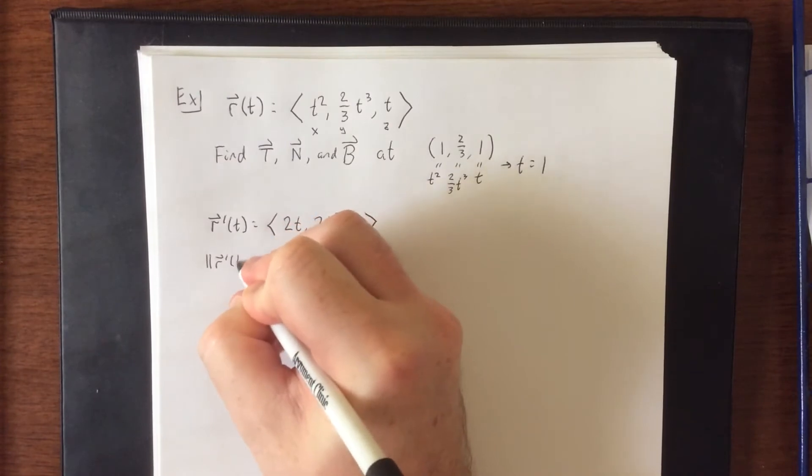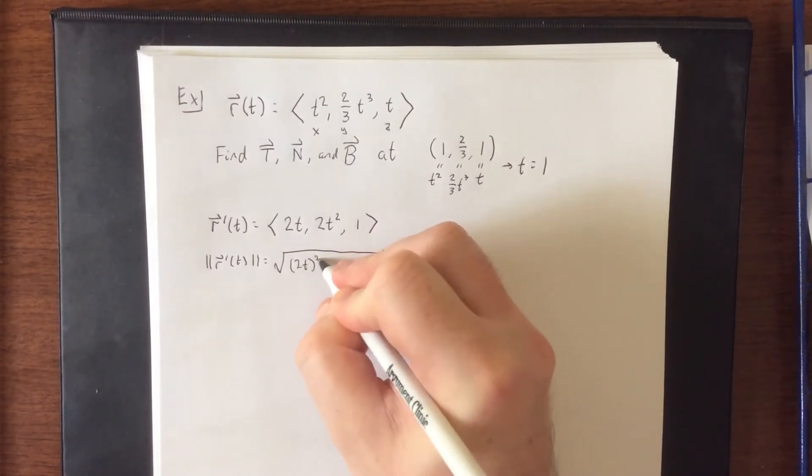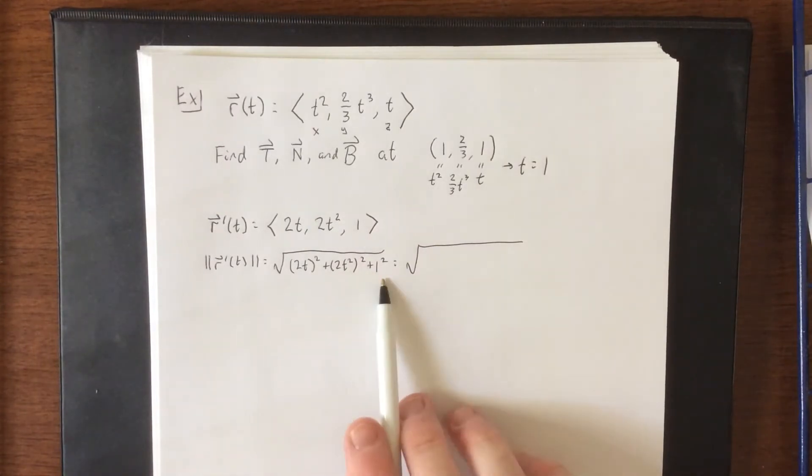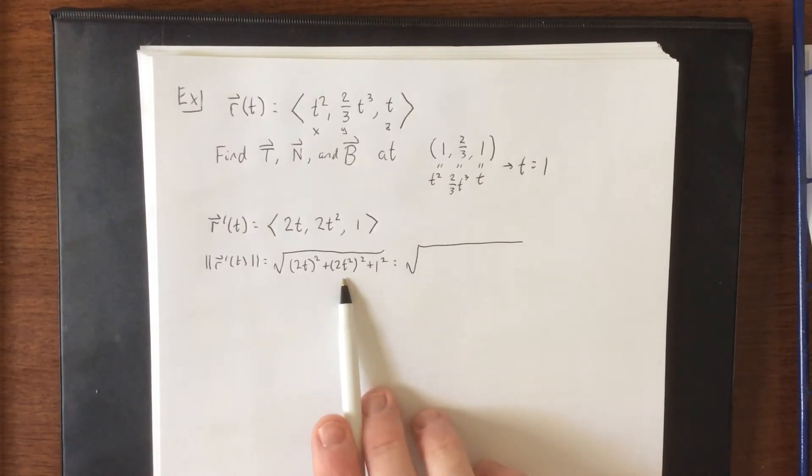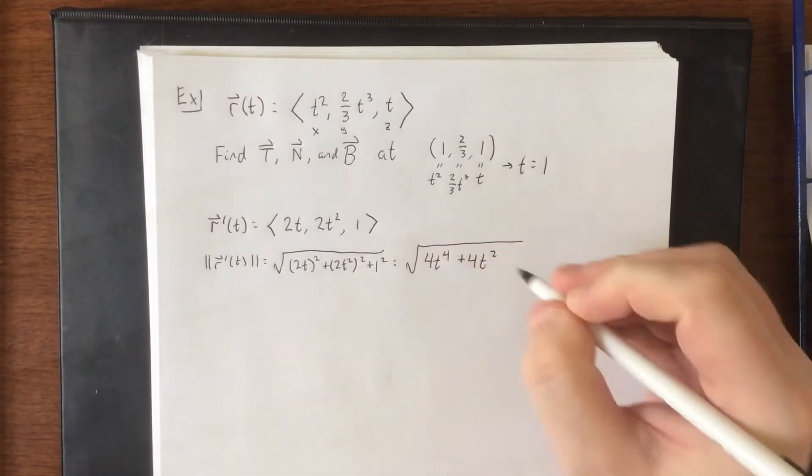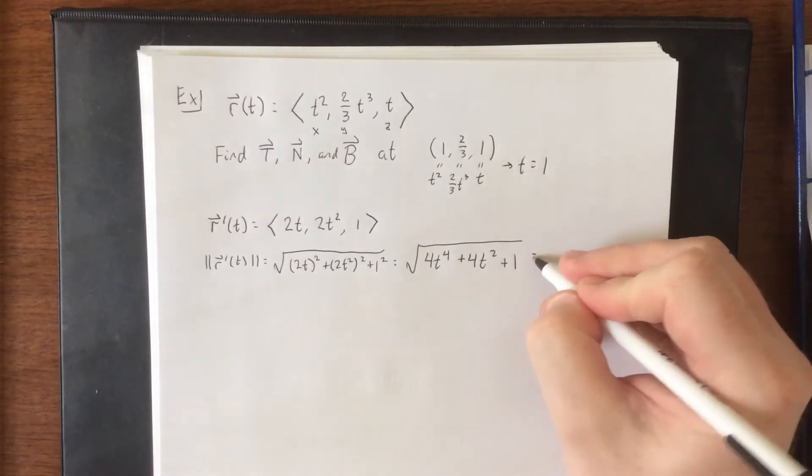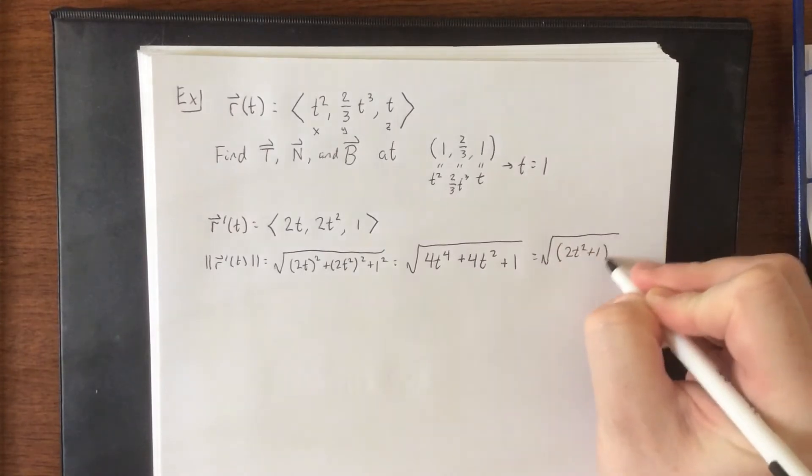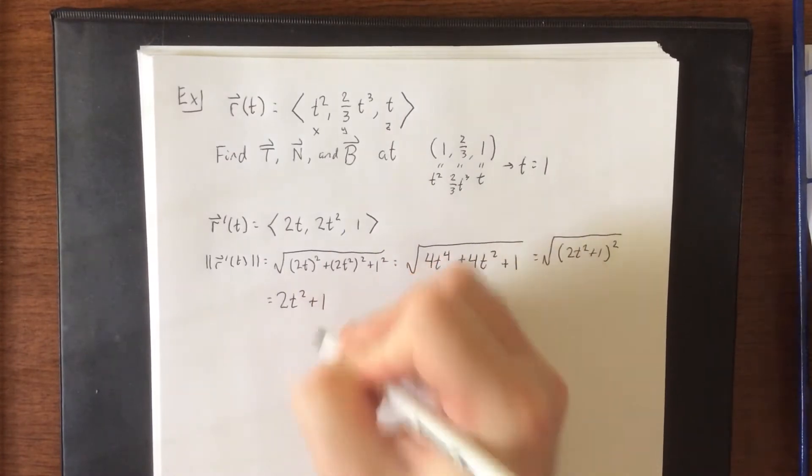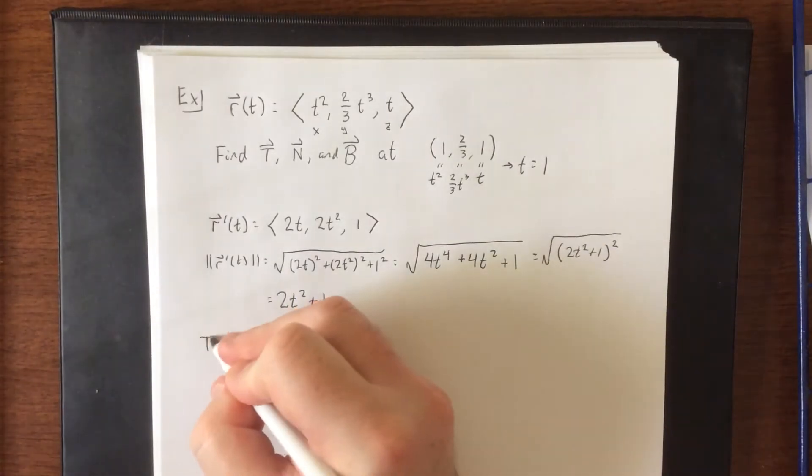Then we'll take the magnitude of this vector so that we can properly create our unit tangent vector. So this will be equal to the square root of 2t quantity squared plus 2t squared quantity squared plus 1 squared. I'm going to write this in a slightly different order than what I used here because I noticed that we're going to have a polynomial, so I'm going to put the biggest power first. Squaring 2t squared gives us 4t to the fourth. Squaring 2t gives us 4t squared. And squaring 1 gives us... Let me grab my calculator. Oh, that's going to be 1. All right, good stuff. As a polynomial, this does factor really nicely, and it's super convenient that it factors this way.